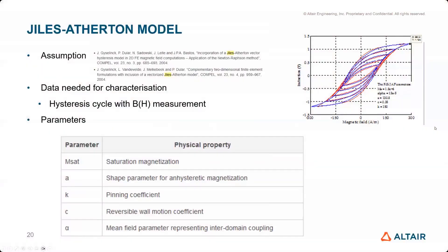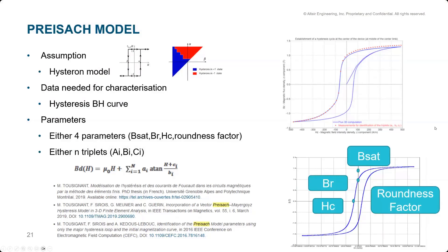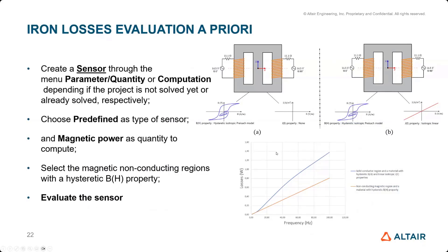Switching to non-laminated regions, we also have solutions. The first methods are the ones used during the solving process, representing the full hysteresis cycle. We have the Giles-Atherton model, which was the first method introduced in Flux, and a second model called the PRESAC model. The PRESAC model is a bit easier to use because you can identify the shape of the cycle fairly quickly from physical meaning. To compute these losses during solving, you create a sensor and choose a predefined magnetic power type of computation, which computes the amount of losses at each time step and allows visualization during solving.